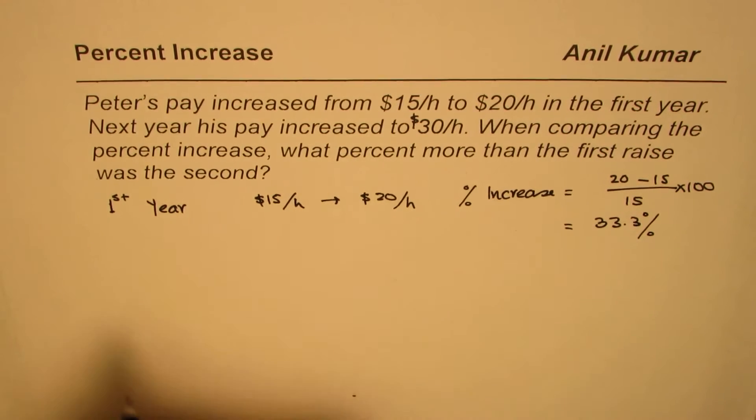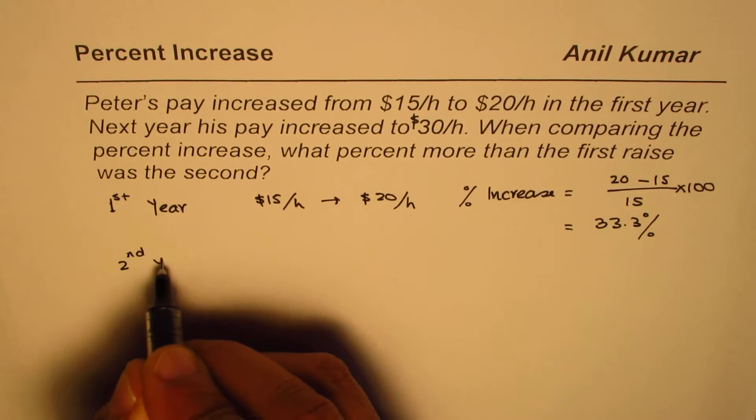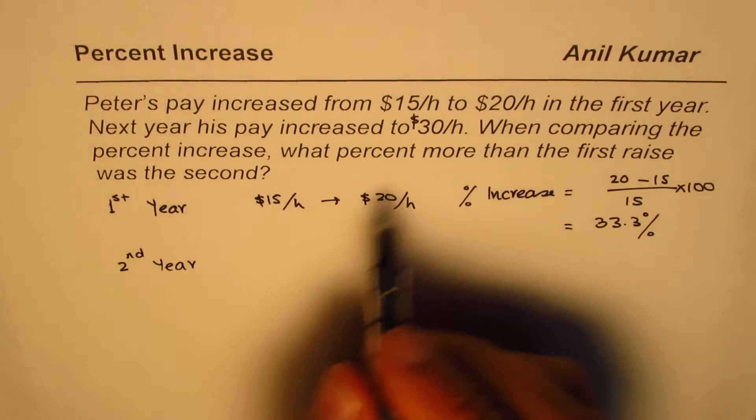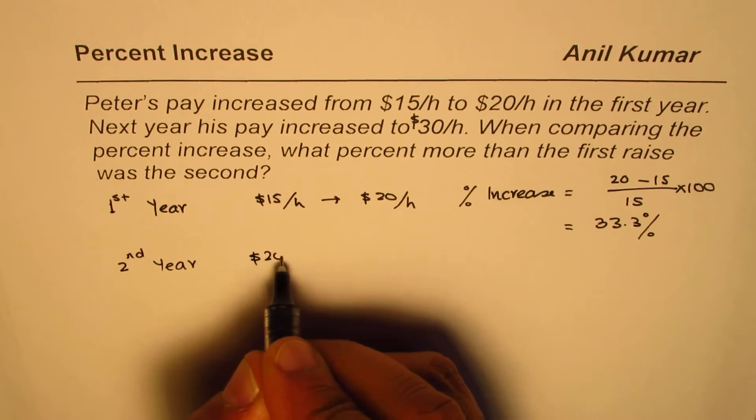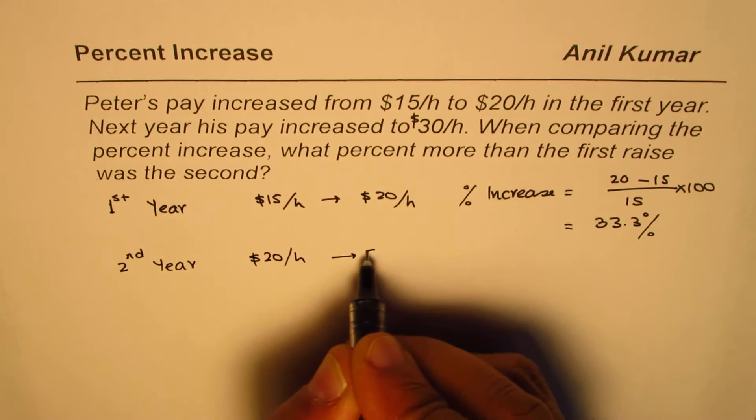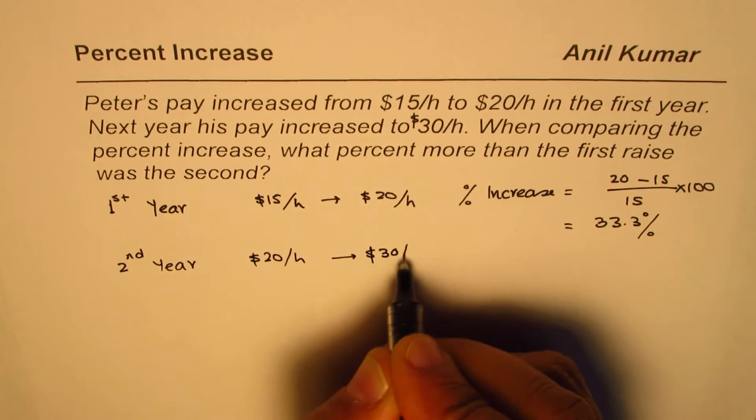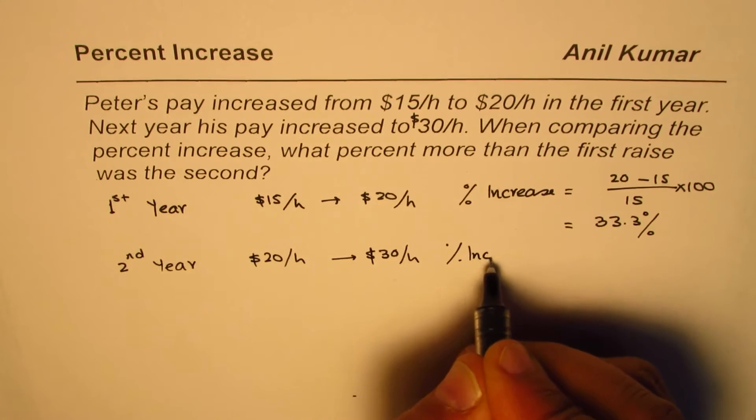in the first year. In the second year it increases from $20 per hour to $30 per hour, and therefore the percent increase is how much?